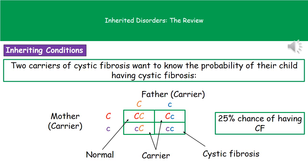The probability of the child having cystic fibrosis is one out of four, giving a 25% chance. You can write that as 25%, one in four, or one over four. There is also a 50% chance of being a carrier and a 25% chance of being normal. Remember, these probabilities are the same for each pregnancy they have.